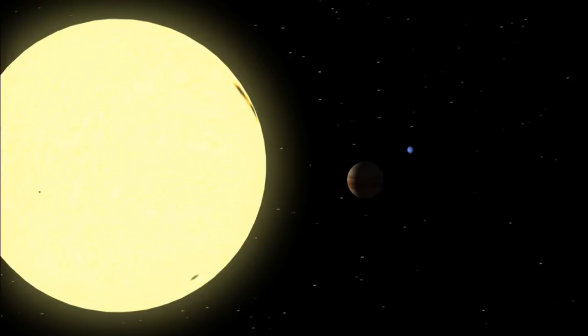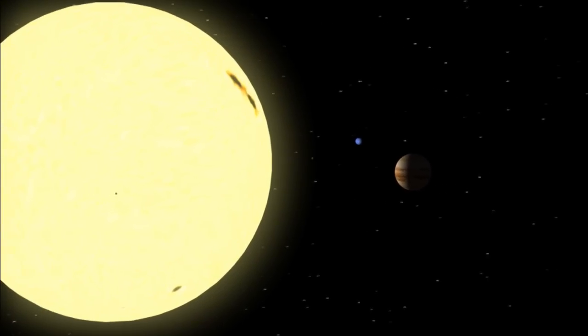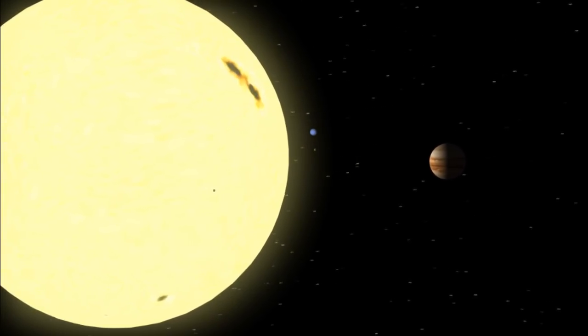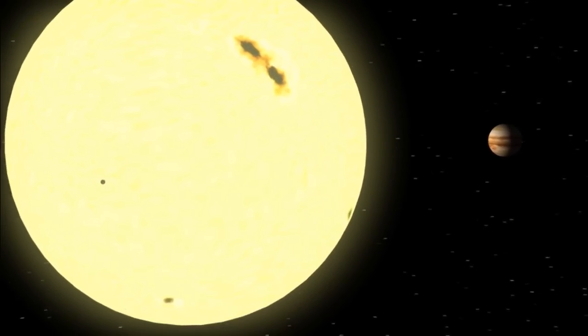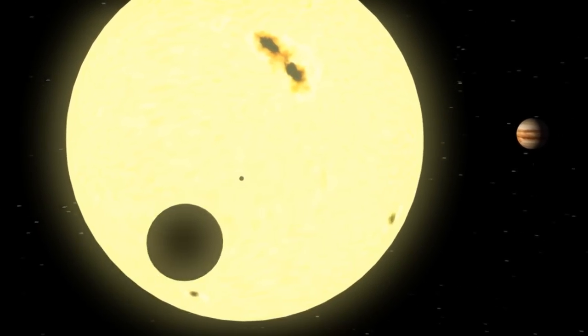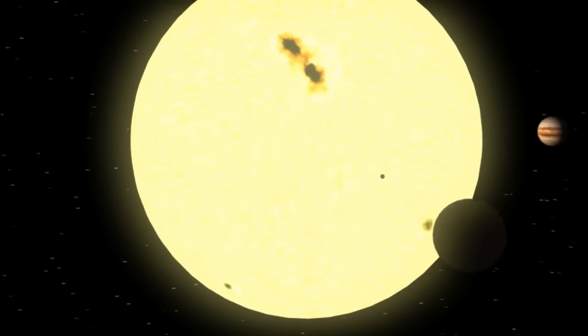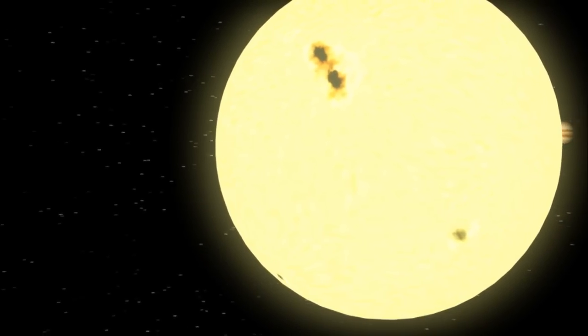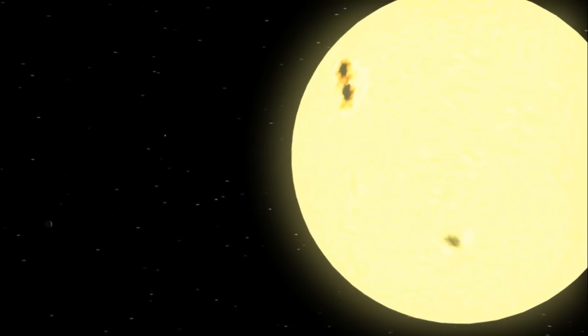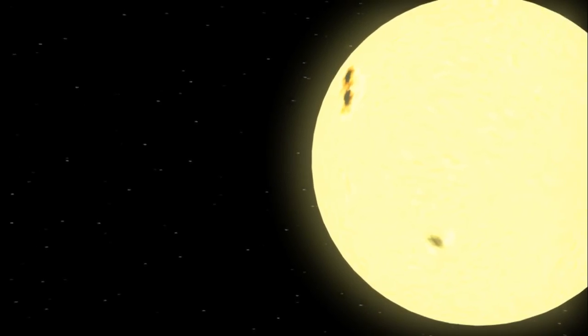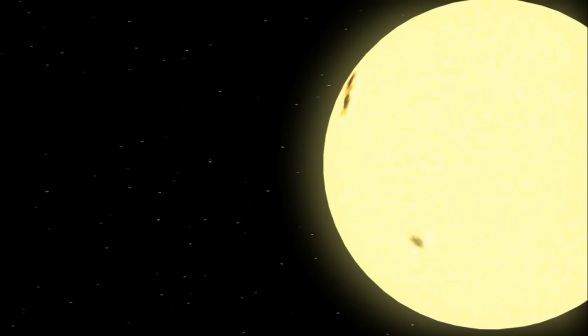Even though our sun is too small to go supernova and create a big black hole, it still produces a small one. This small black hole is formed at the center of the star or the core, where the pressure and heat is very intense. But a star that has the mass three times of our sun could go supernova and produce a big black hole.